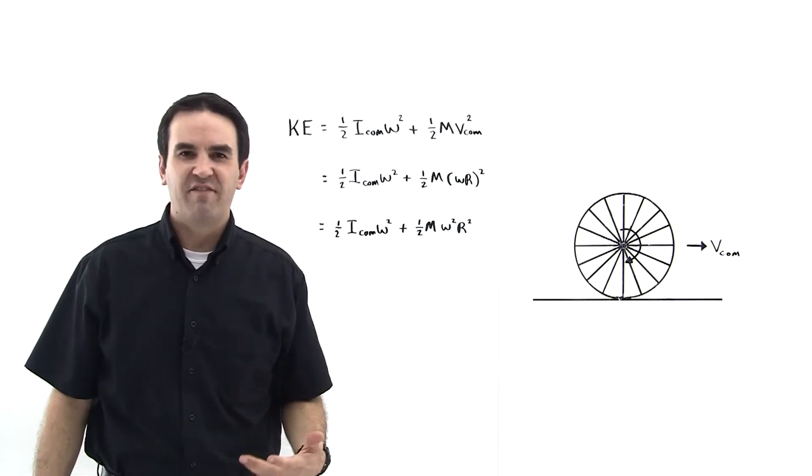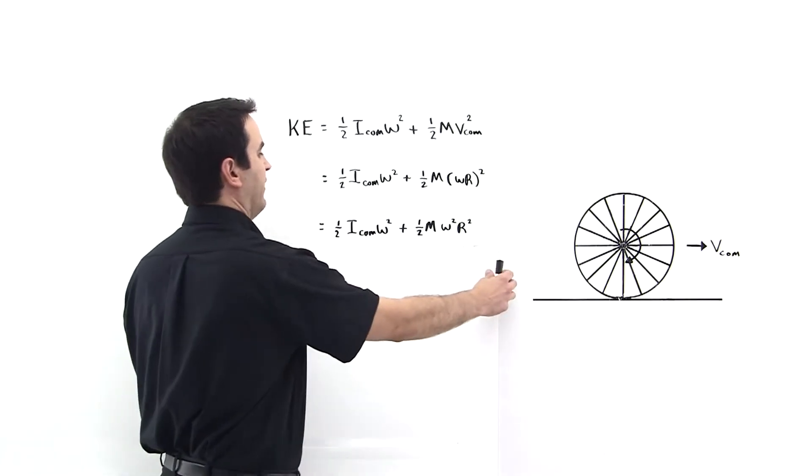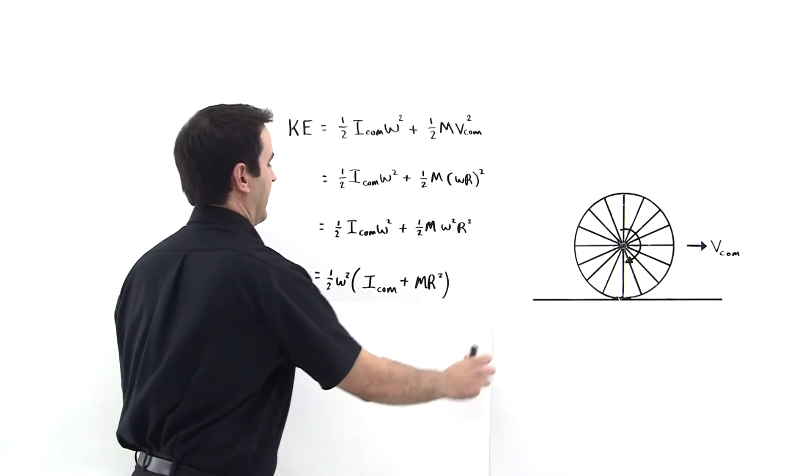Now they both have the common factor one half omega squared. See it here, here, here and here. So let's factor that common factor out.